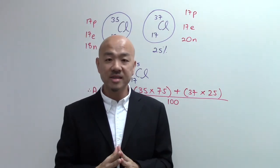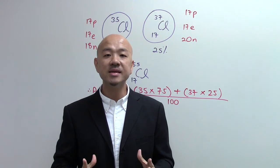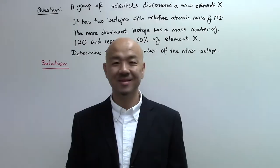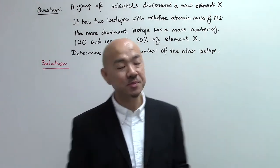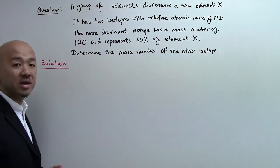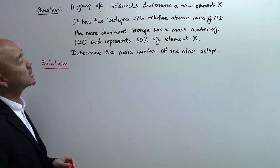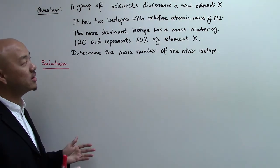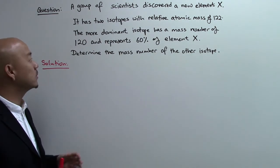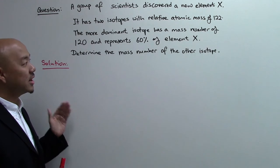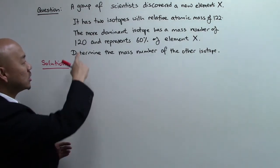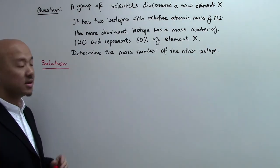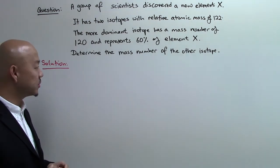Now we're going to look at an exam question and see how isotopes are being tested. In this question, a group of scientists discovered a new element X. It has two isotopes with a relative atomic mass of 122. The more dominant isotope has a mass number of 120 and represents 60% of element X. Determine the mass number of the other isotope.